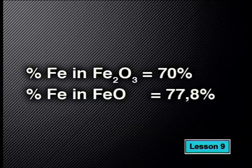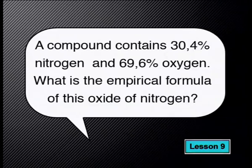Now we are ready to compare the percentage compositions of the two iron oxides. Clearly, iron 2 oxide has a higher percentage of iron than iron 3 oxide. If you wanted to extract pure iron from rocks, you would choose a rock with the higher iron content. Suppose I've been given the percentage composition of a compound — either from careful laboratory measurements or from an electron scanning microscope. Would I be able to calculate the empirical formula? Have a look at this question: a compound contains 30.4% nitrogen and 69.6% oxygen. What is the empirical formula of this oxide of nitrogen?